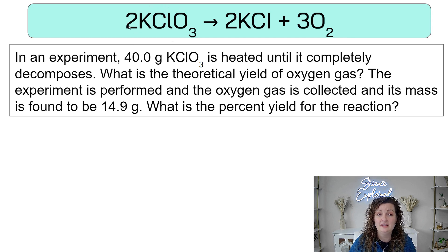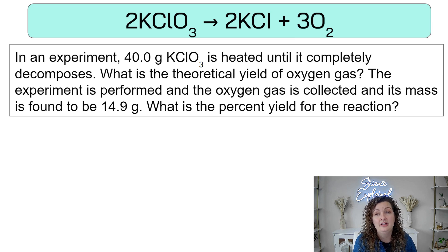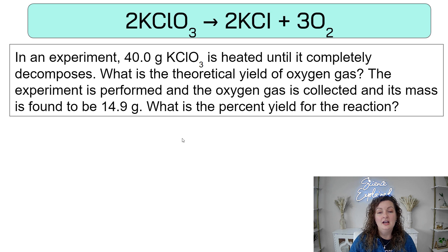We have one reactant and we have two products. It is giving us the mass of our reactant. So what is this other number here? This 14.9 grams — it's saying they performed an experiment and the oxygen gas that they collected was 14.9 grams. In other words, that's a real world number. They did the experiment, they actually captured it, they calculated it. It was 14.9 when they took the mass of the oxygen gas. So that is the actual yield because that's the real world number. We are looking for the theoretical yield of oxygen gas — oxygen gas is right here, O2.